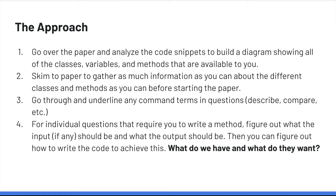Let's go over tips on how to approach an Option D exam paper in the first 20 minutes. The first thing you want to do is look at the code given on the exam and build a diagram showing the classes, variables, and methods — not just from the first page, but any code snippets throughout the paper. Build a diagram similar to a UML diagram showing how they're related. Also look at methods that only have comments, because you'll likely need to write those methods later, and understanding them early makes it much easier.